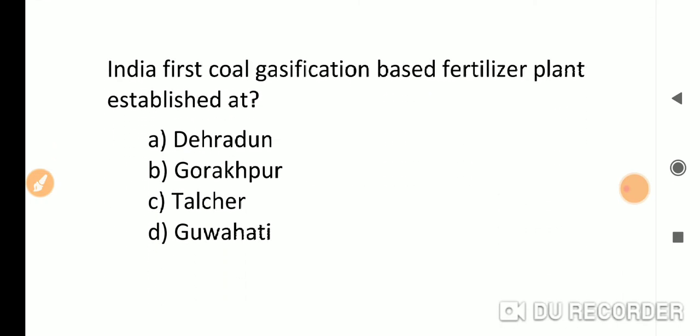India's first coal gasification based fertilization plant was established at Talchar, Odisha, option C.